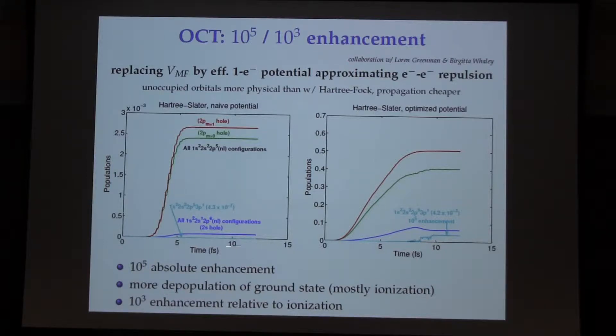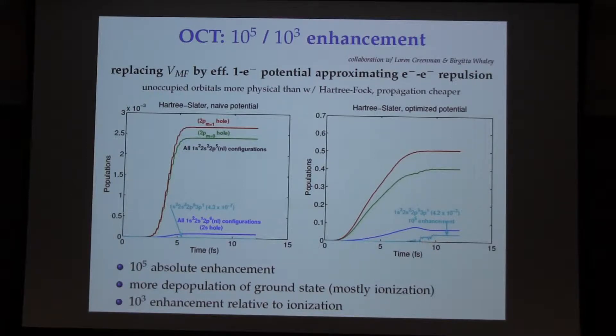We don't get to the target set; we mostly get ionization. If you look at the optimized pulse, you get an enhancement relative to the gas pulse of 10 to the minus 5.